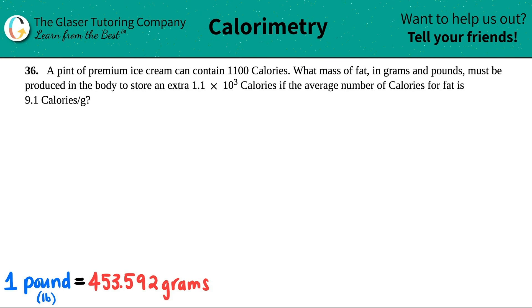Number 36: A pint of premium ice cream can contain 1100 calories. What mass of fat in grams and pounds must be produced in the body to store an extra 1.1 times 10 to the 3 calories if the average number of calories for fat is 9.1 calories per gram?